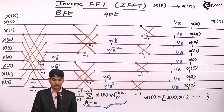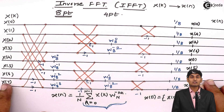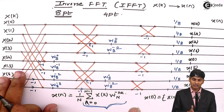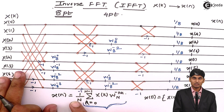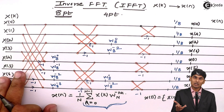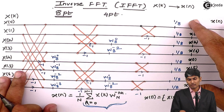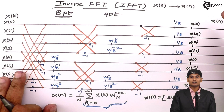So for an 8-point IFFT, the flow graph looks very similar to DIF FFT, with the positions of X of K and X of N interchanged and the sign of the twiddle factors changed. X of K becomes the input, X of N becomes the output. Bigger crisscrosses at the first stage, and as the stage proceeds further, the crisscrosses become shorter and shorter. After each crisscross, we have twiddle factor multipliers with negative indexes. After the third stage, we divide each sequence by 1 by 8 and rearrange to get the final output.